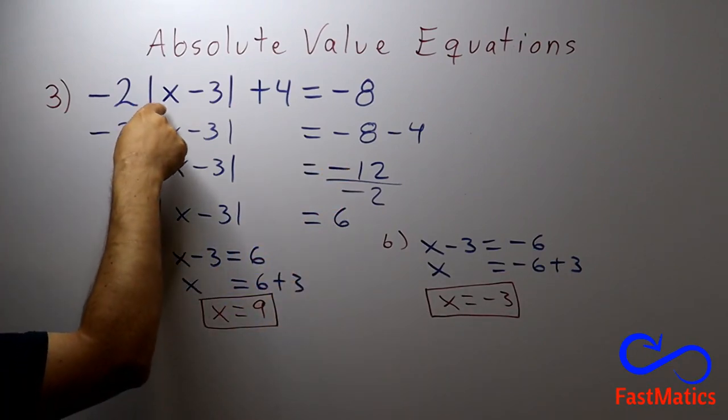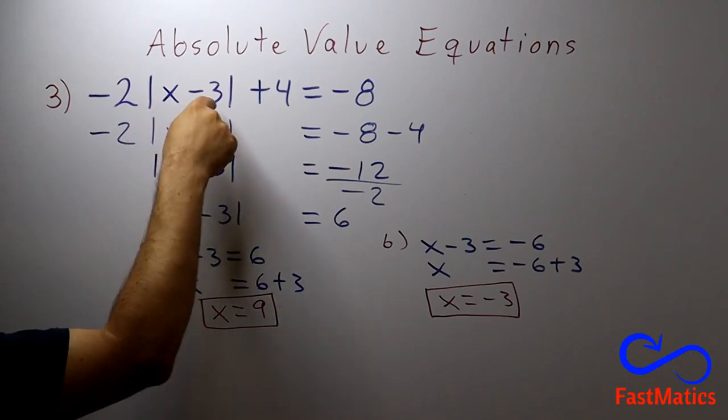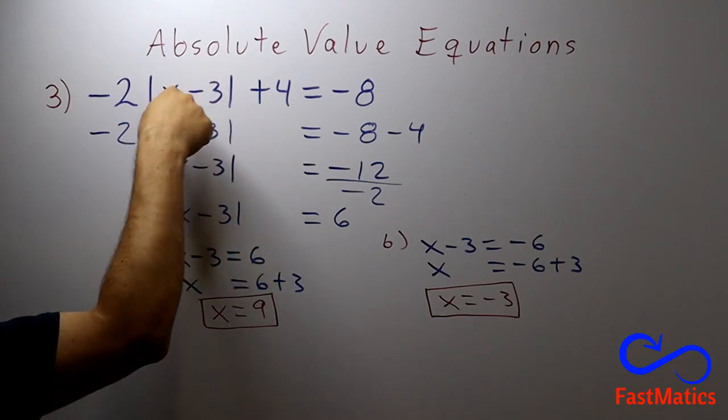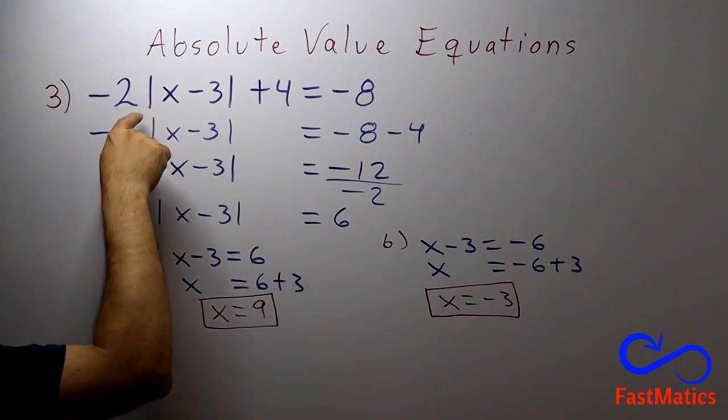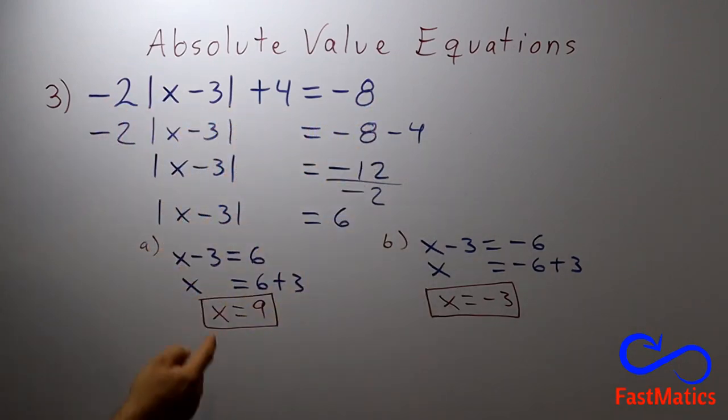If you replace the x with the 9, 9 minus 3 is 6. Absolute value of 6 is 6 times negative 2 is negative 12 plus 4 is negative 8. Correct.